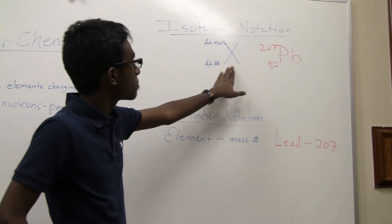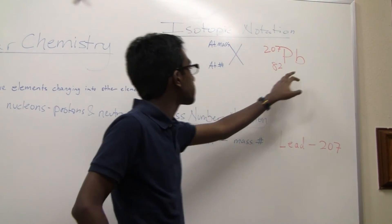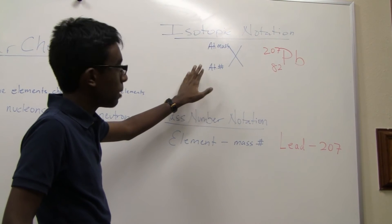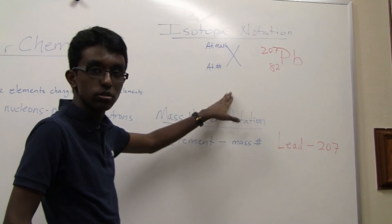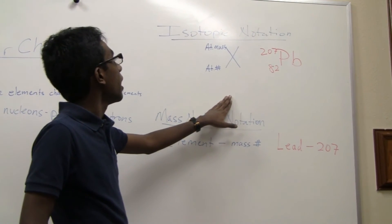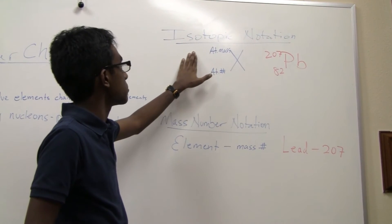So for lead, the symbol is Pb. You put the atomic number. The atomic number of lead is 82. You can find that on your periodic table. And you put the atomic mass for this isotope.